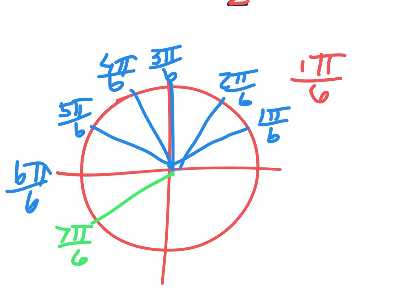And then you'll know it's a certain kind of triangle. I hope you know all three angles and the side ratios, and you put those on there. Now some kids say, can I just draw the triangle like this? No, you cannot. It has to go to the x-axis. This is the x-axis. It has to go like that. And there's my reference triangle — it's just not labeled.